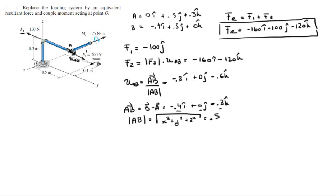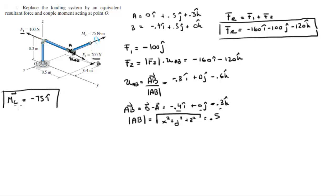Now we have the resultant force. What we need to find is the resultant moment. There are three moments acting on this assembly: the moment F1 creates, the moment F2 creates, and moment MC. You can tell right off the bat that MC is parallel to the negative x-axis, so its Cartesian vector form is -75i.